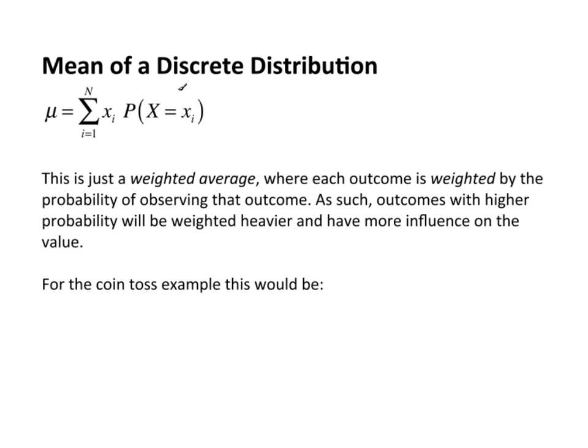The mean for a discrete distribution, discrete probability distribution, μ, is equal to the sum, i equals 1 to capital N. This capital N is the population size.